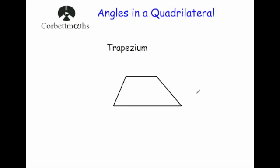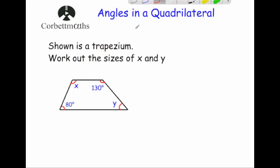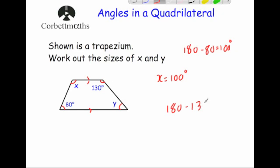Finally, here we've got a trapezium. The top line is parallel to the bottom line, so the two angles on the left will add together to give 180 degrees, and the two angles on the right will also add together to give 180 degrees, because they're co-interior. For the question — work out angles x and y: x plus 80 equals 180, so x equals 100 degrees. And 130 plus y equals 180, so y equals 50 degrees. Checking: 100 plus 50 plus 130 plus 80 equals 360 — correct.